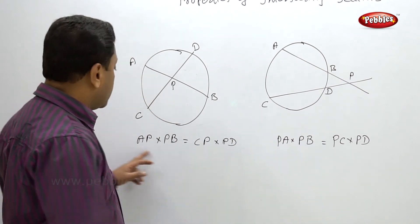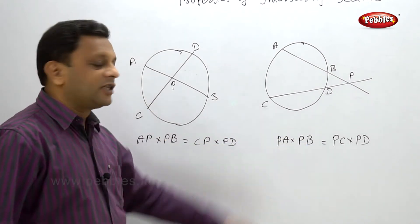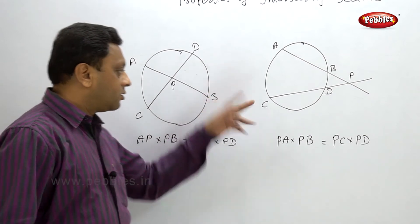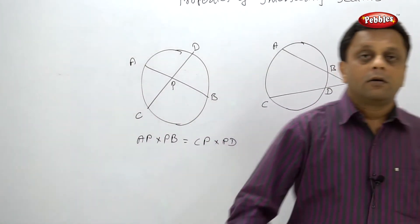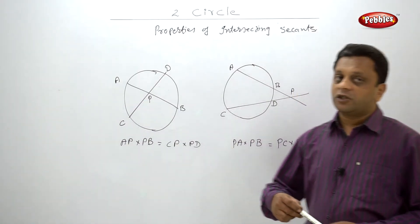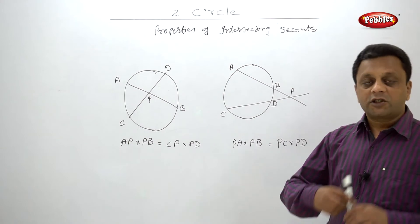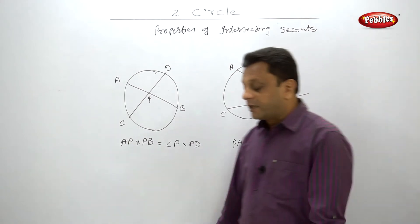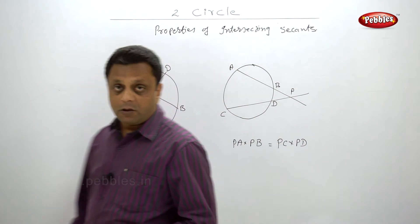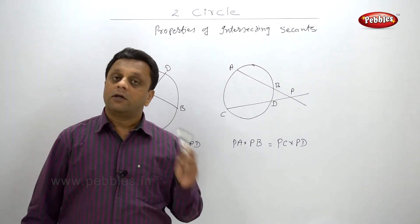You will see here that both the things are same, just the name of the line segments are changed. Just remember one thing: you have to take distance from point of intersection to both the points on the secant.